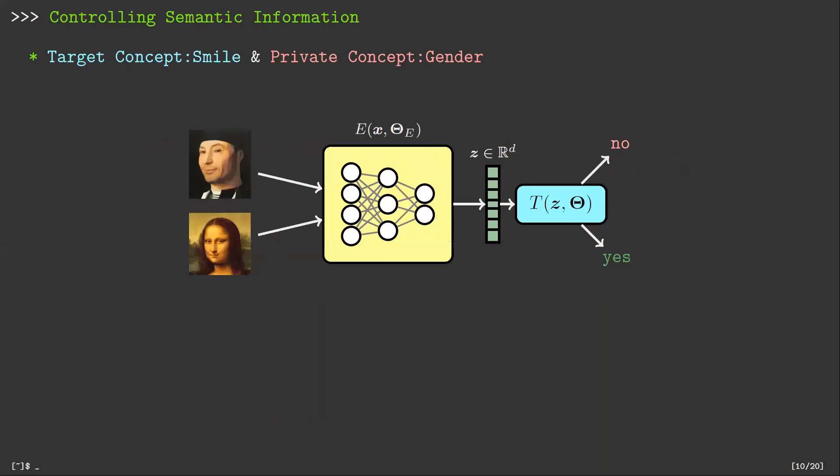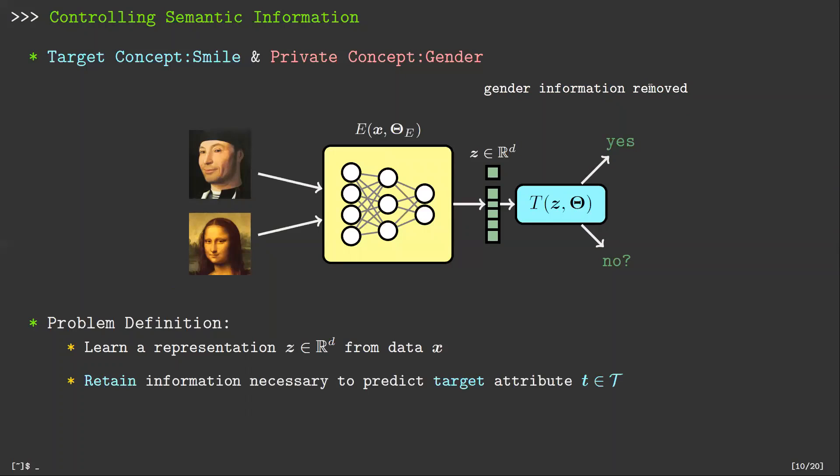So, what can we do? A very intuitive approach to control semantic information is first to learn a representation from data in a standard way. Then the information necessary for the target task is retained, while at the same time, the information related to the sensitive attributes is removed.